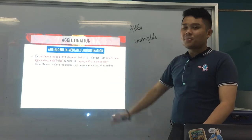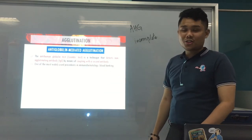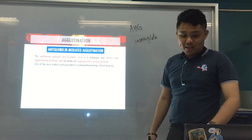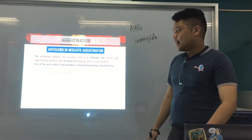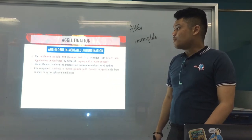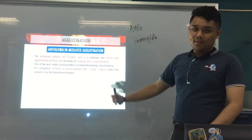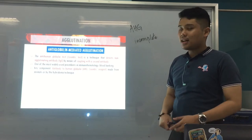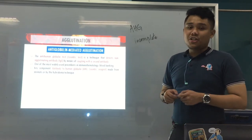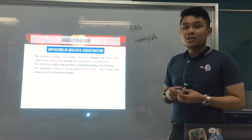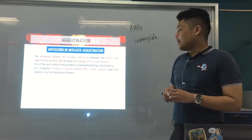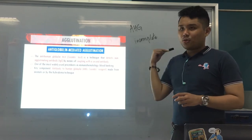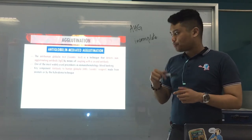It's one of the most widely used procedures in blood banking or immunohematology. The key component is the antibody to human globulin — your AHG, or your Coombs reagent — which is made from animals or by the hybridoma technique.